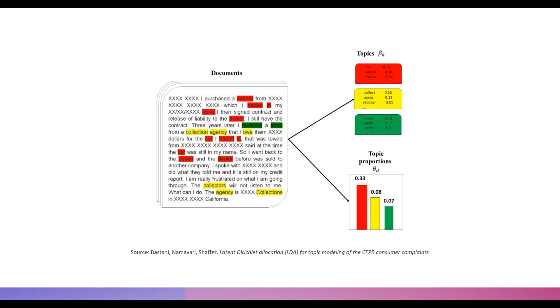The red words indicate topic one: car, vehicle, finance. The yellow words indicate topic two: collect, agency, recover. And the green colors represent the third topic. These are the different topics in the text, and you can see how they're divvied out proportionally. There is more red in this document, so it receives topic one—vehicle, car, finance—with a higher proportion. Yellow is less frequent but still relevant, and green is slightly less relevant than that.